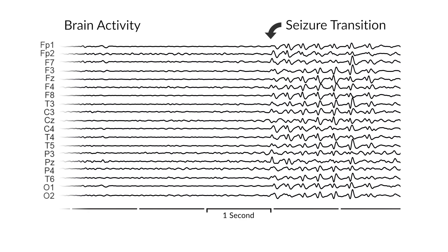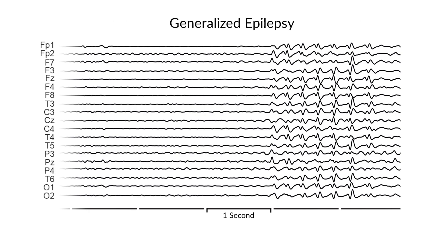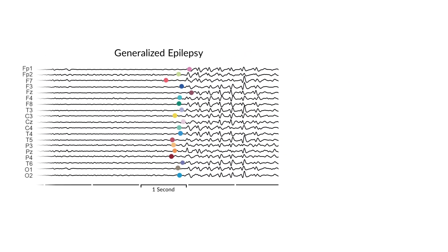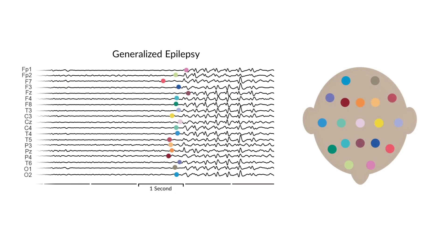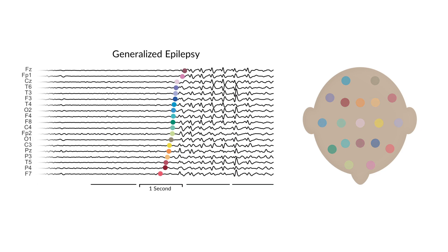This is an EEG recording of a seizure that affects the whole brain. This type of epilepsy is called generalised epilepsy. Each dot marks the start of the seizure on that electrode. We show the positions of the electrodes as dots on the head using this top-down view. If we arrange the recording like this, we can see that the seizure spreads in a domino effect. When one region goes into a seizure state, it can cause other regions it is communicating with to transition too.